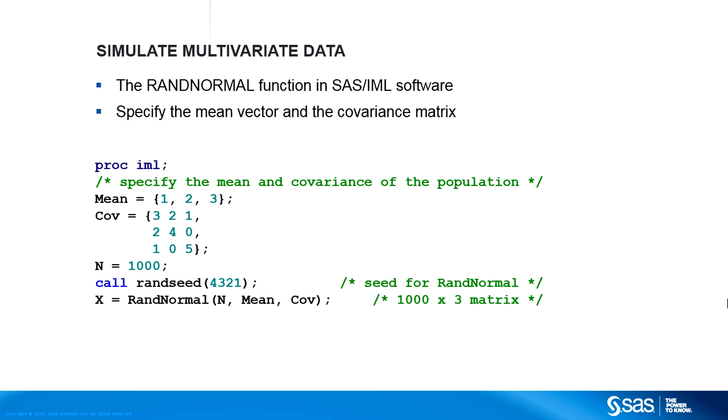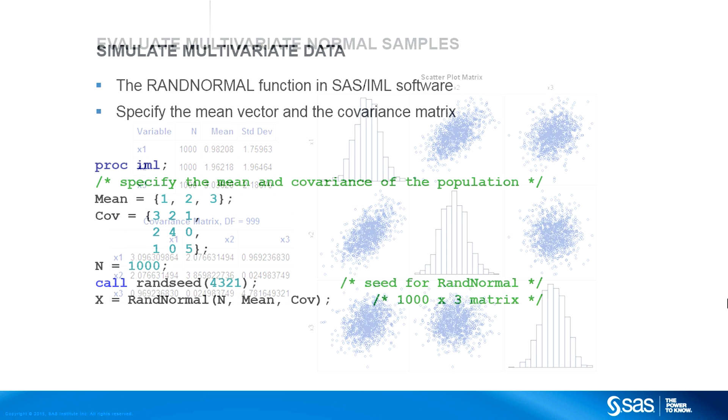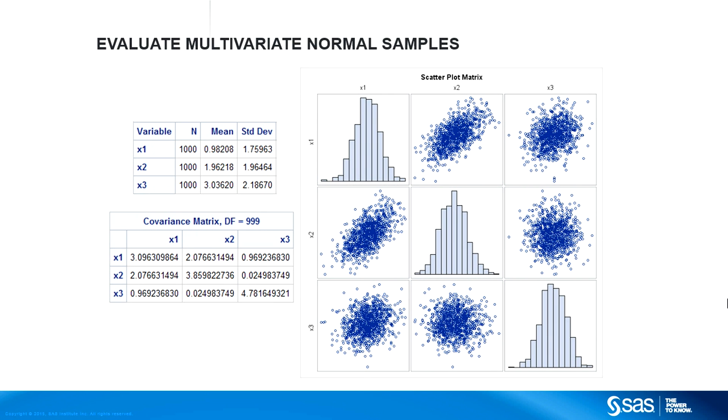For example, this program simulates 1,000 observations from a trivariate normal distribution. All you need to do is specify the mean vector and the covariance matrix. The rannormal function returns a 1,000 by 3 matrix where each row is an observation for the three correlated variables. You can compute sample statistics on the data matrix to convince yourself that the simulated data are correct. The mean of the simulated data is close to the population mean. The covariance of the simulated data is close to the population covariance.